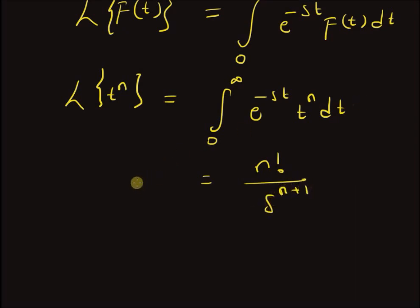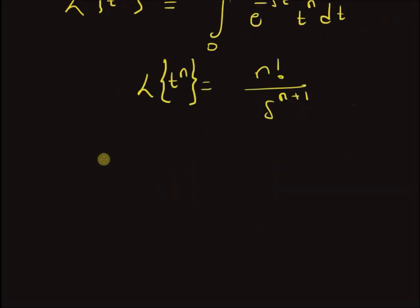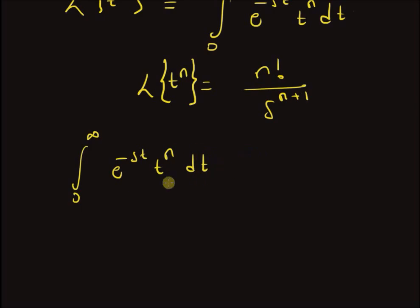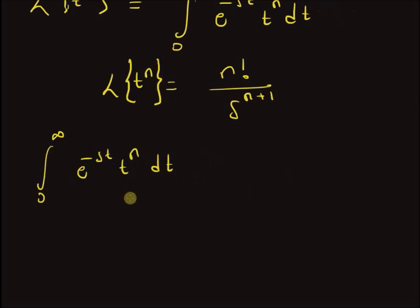Therefore, the Laplace transform of t^n is given by n factorial over s^(n+1). Now let us look at the proof for this result — that is, we are going to evaluate the integral from 0 to infinity of e^(-st) t^n dt. To evaluate this integral we need to know the formula for integration by parts.